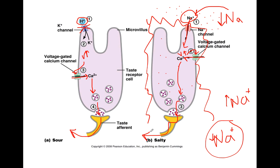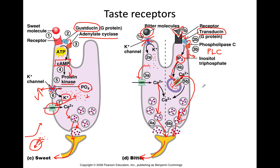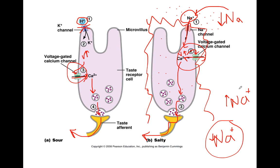The big commonality across all four taste mechanisms is that calcium is required for exocytosis. Voltage-gated calcium channels are present in the membranes of the sweet, sour, salty, and bitter (left pathway) receptors. The bitter right pathway uses a ligand-gated calcium channel on the ER instead. Make sure you can go step by step through the binding of each chemical and the signal transduction process for each of the four taste sensations.